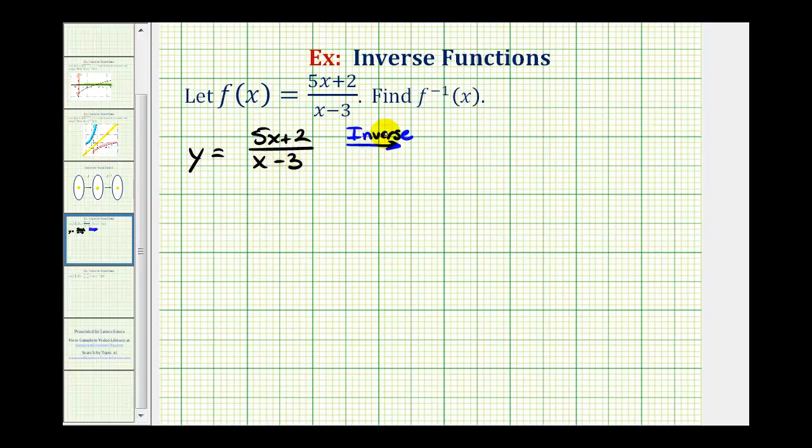So the inverse function will be x equals the quantity five y plus two divided by y minus three. So this y, which is the output of function f, is now the input, or the x value for the inverse function.